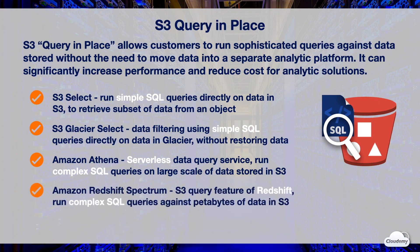If you're already using Amazon Redshift as a managed data warehouse service and storing massive data in S3 as the data lake, you can alternatively consider using a feature called Redshift Spectrum. Redshift Spectrum allows you to run complex SQL queries against petabytes of data in S3, without having to load or transform any data. Redshift is also integrated with other AWS Big Data and Machine Learning services, such as Amazon EMR, QuickSight, and SageMaker.